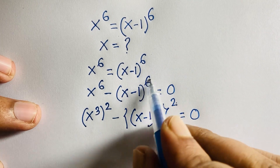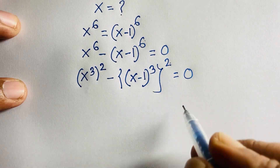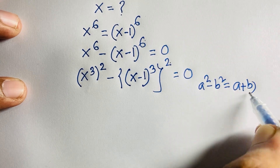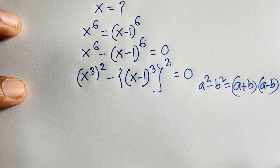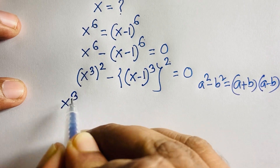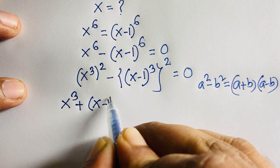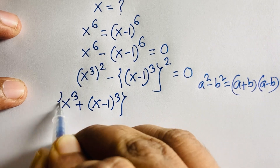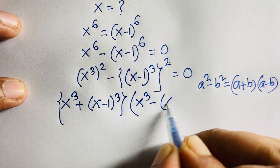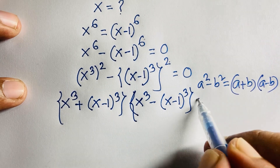Now, if we think of x³ as a and (x-1)³ as b, we know that a squared minus b squared equals a plus b times a minus b. Applying this rule, it becomes x³ plus (x-1)³ times x³ minus (x-1)³ is equal to 0.